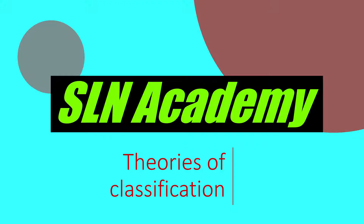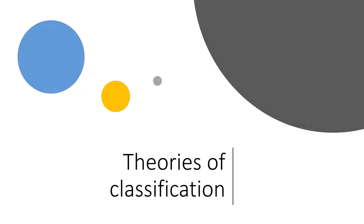Theories about classification of living things. There are many theories about classification, but let us look at two main theories of classification. They are: Aristotle's theory and Corleus-Lineus theory.